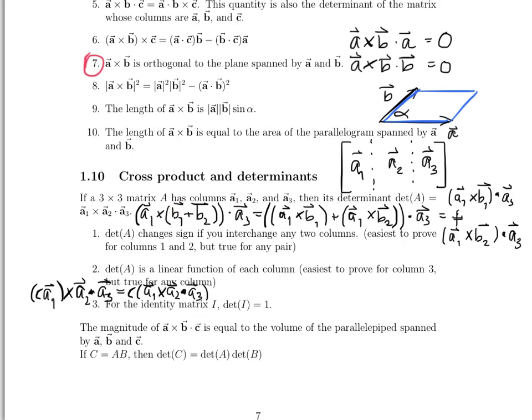Last but not least among these properties, the 3 by 3 identity matrix — with 1s down the diagonal and 0s elsewhere — has a determinant of 1. And the magnitude of A crossed with B dotted with C is equal to the volume of the parallelepiped spanned by A, B, and C.